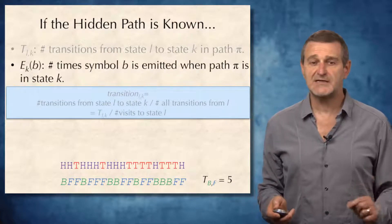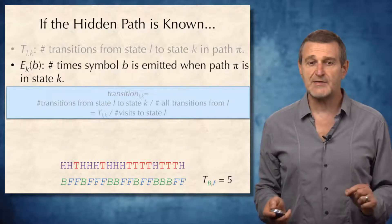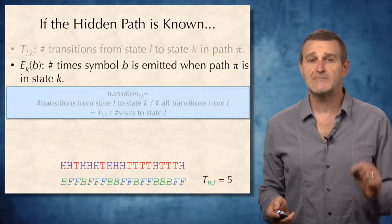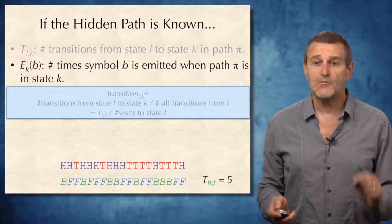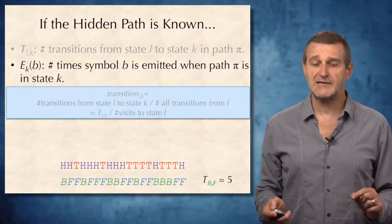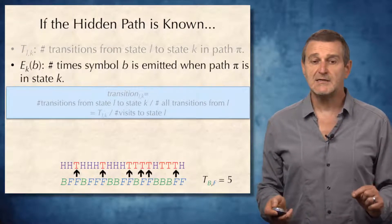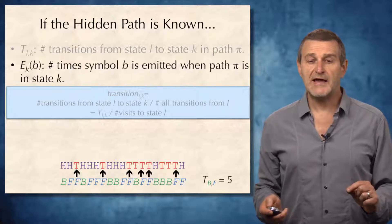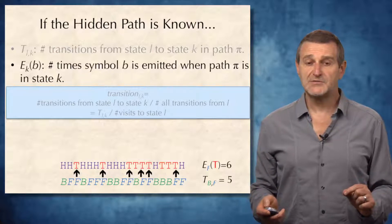In our case, E_{F,T} will be equal to 6. And the common sense again suggests to define emission probability of symbol b from state k as the number of times symbol b is emitted in state k divided by the total number of symbols emitted in state k.